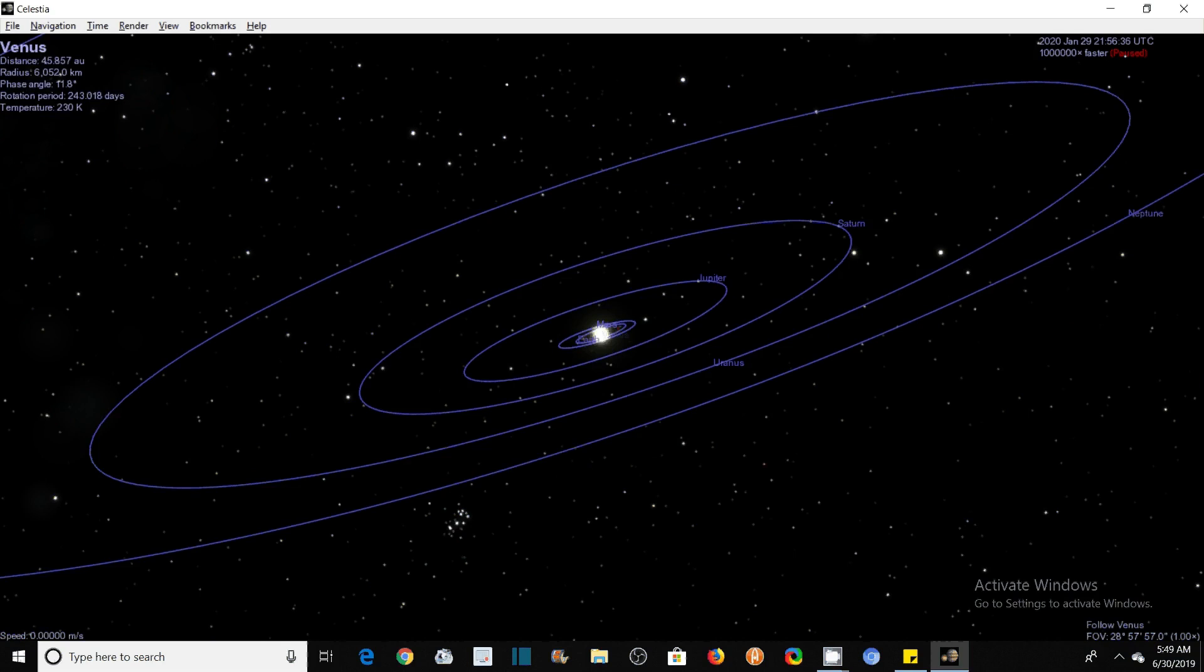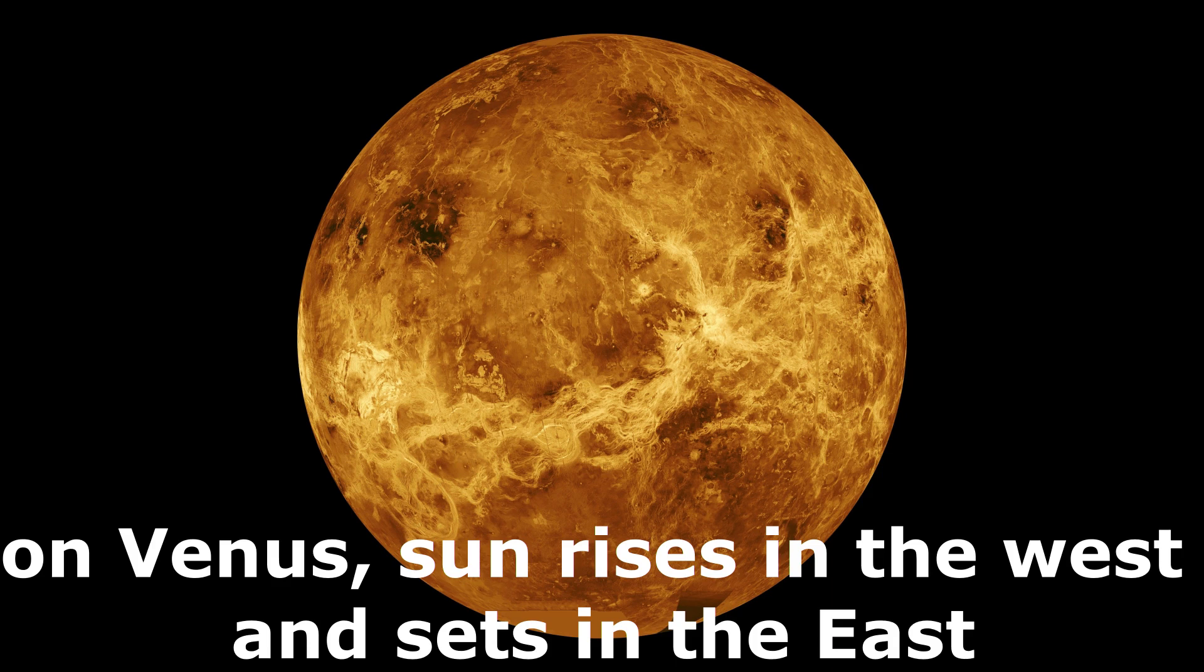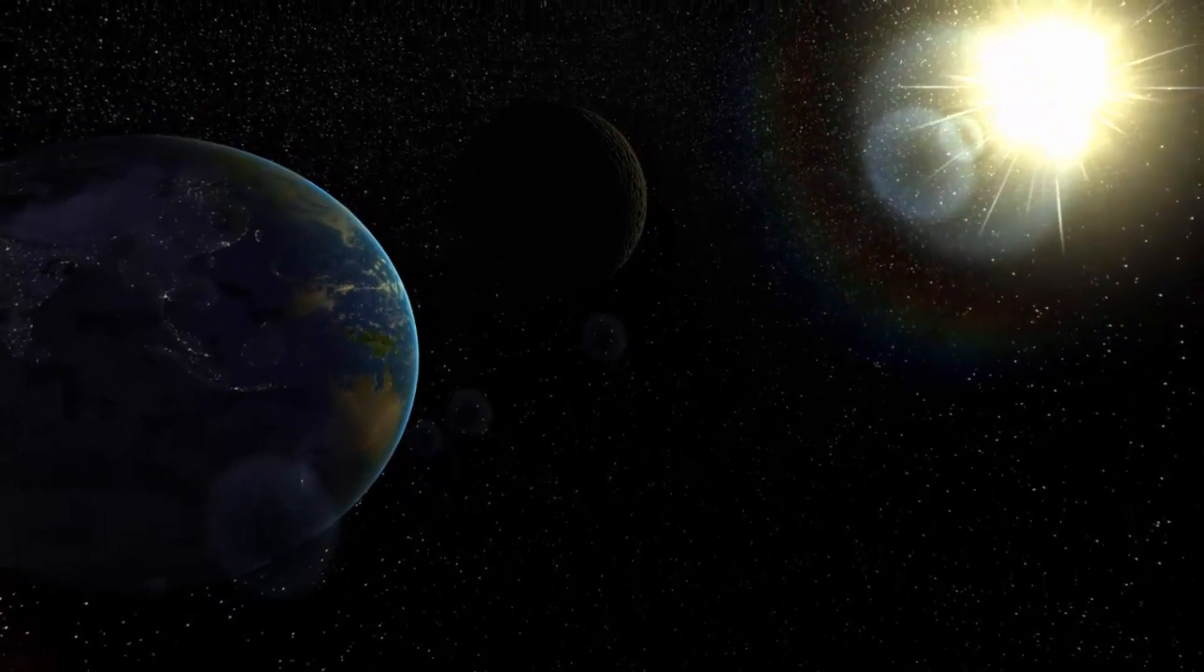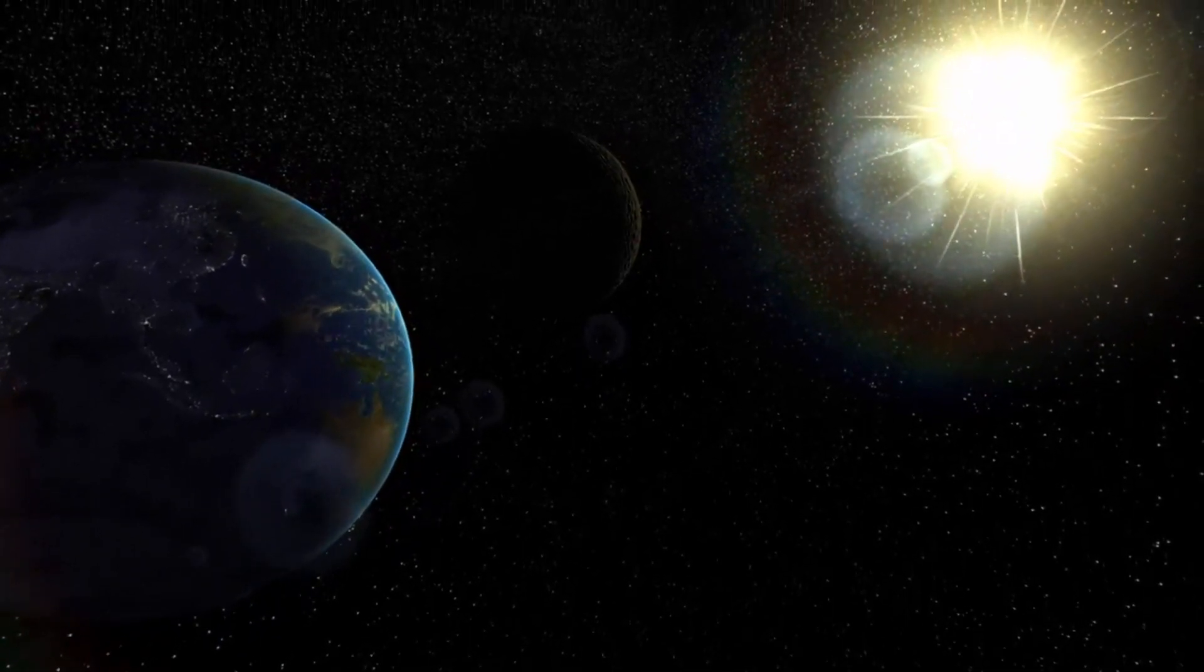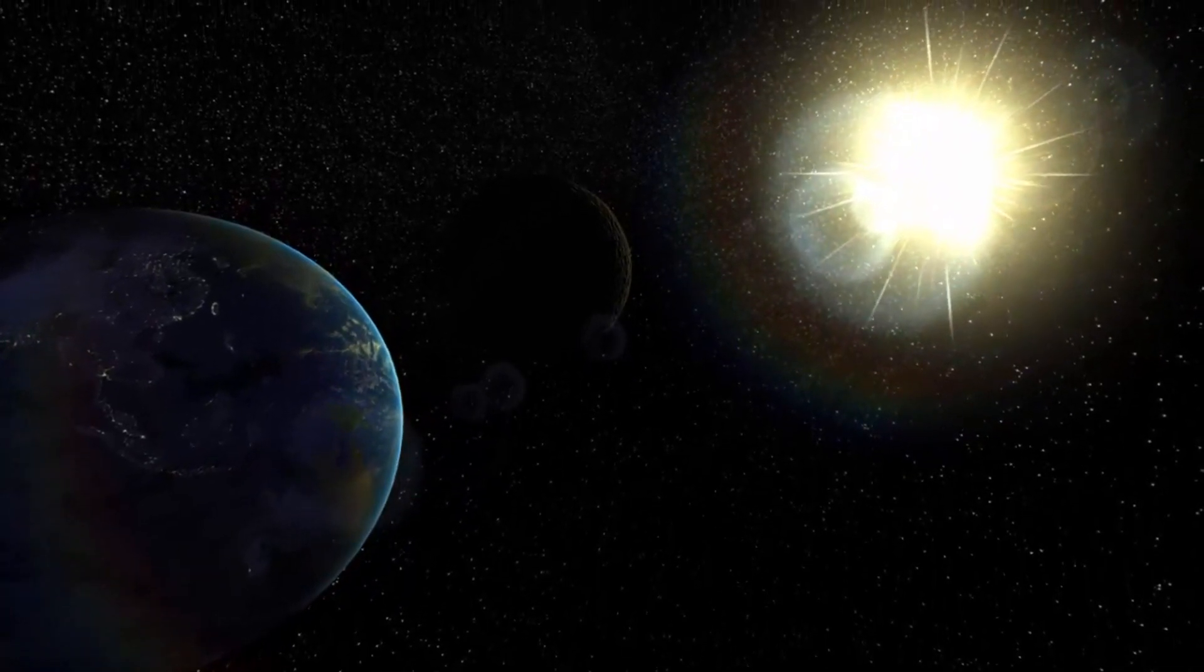You will find it interesting that on Venus, the Sun rises in the west and sets in the east, which is just opposite to what happens on Earth. The reason behind this is Venus rotates in the opposite direction to the Earth.